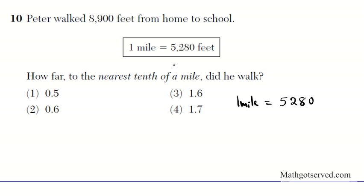I know that one mile equals 5,280 feet. The question is, how many miles is 8,900 feet? So let's say x miles equals 8,900 feet. So I'm going to set up a ratio of the miles and a ratio of the feet. I'm going to have 1 over x equals 5,280 over 8,900. This is true because they're identical ratios.